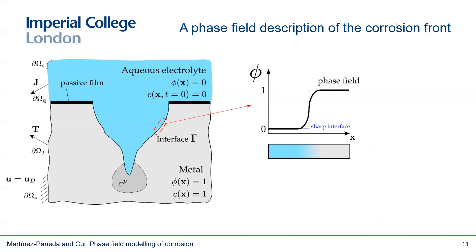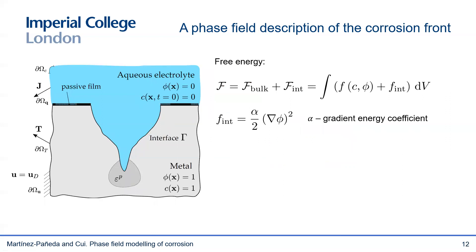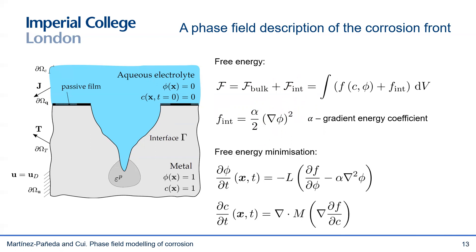We smear the interface using the auxiliary phase field variable, such that the phase field equals one in the metal and equals zero in the aqueous electrolyte — seawater, for example. The phase field acts as a marker, and this enables us to easily track the corrosion interface. The driving force for any phase transformation is the reduction of the system's free energy f. In a phase field model, this free energy is given by the homogeneous bulk energy and the interface energy, with the interface energy involving a gradient energy coefficient. We derive the governing equations by minimizing the free energy functional f using variational differentiation.